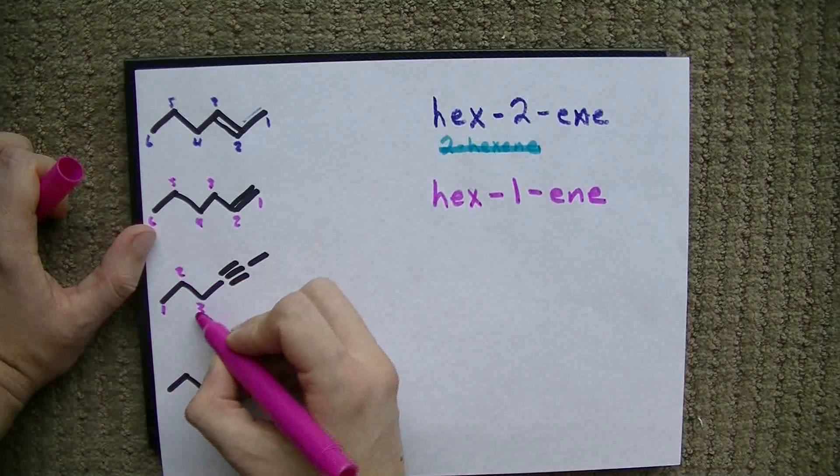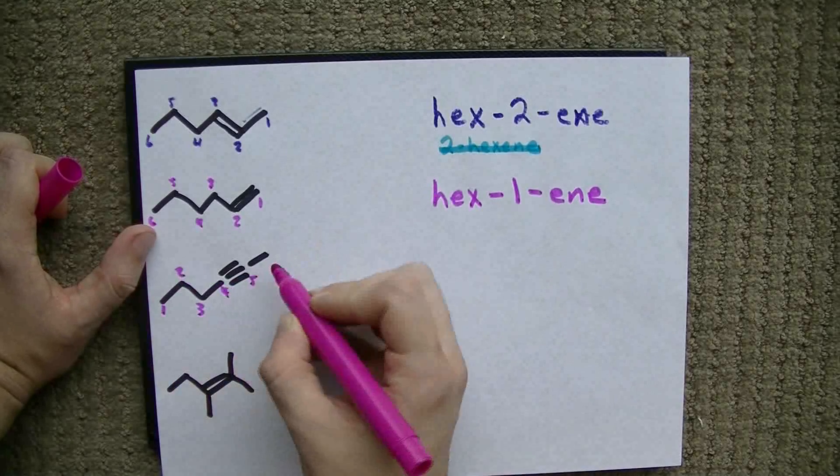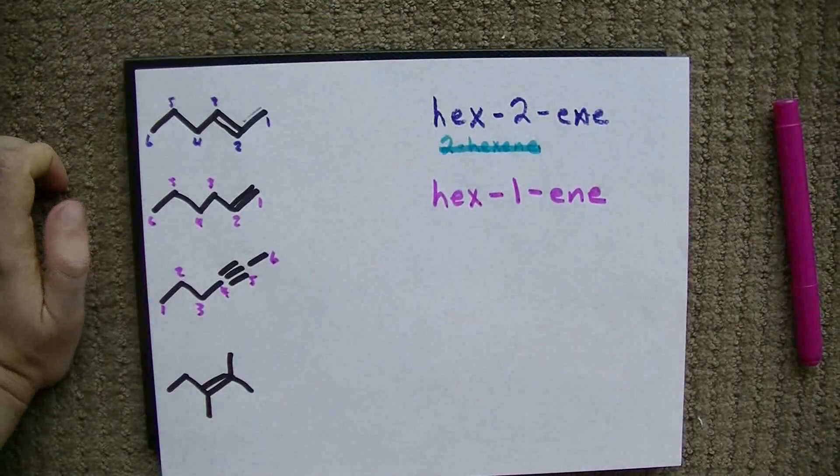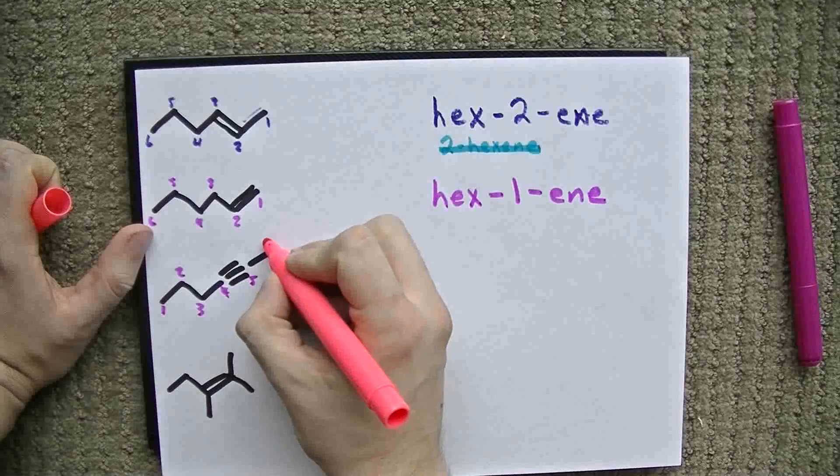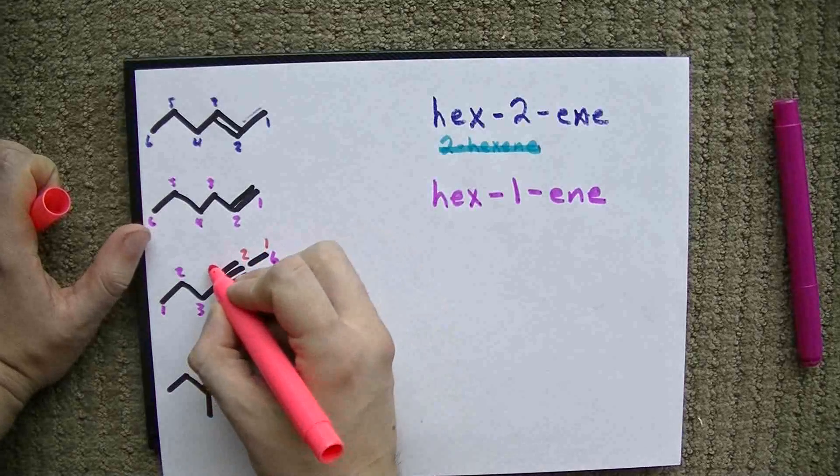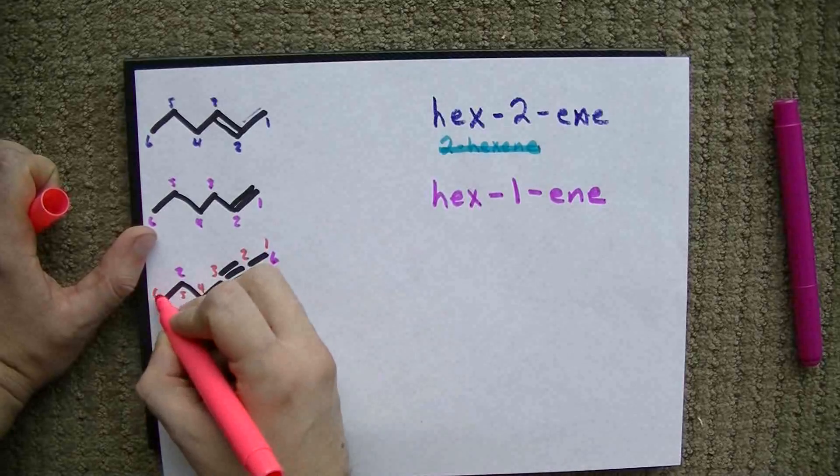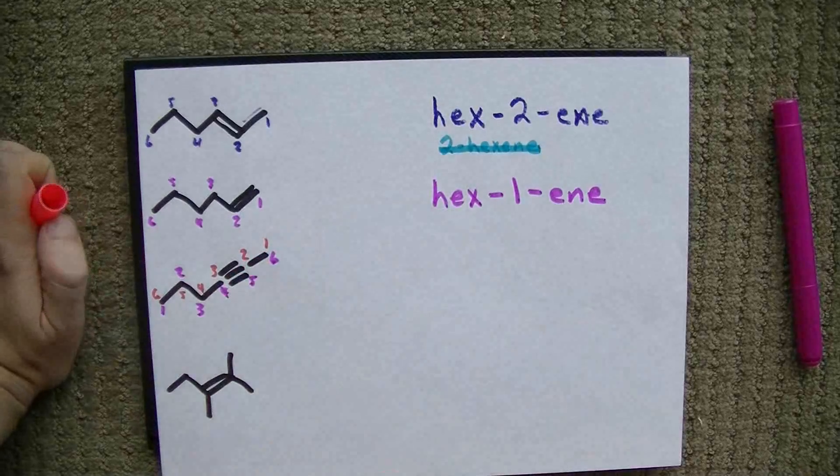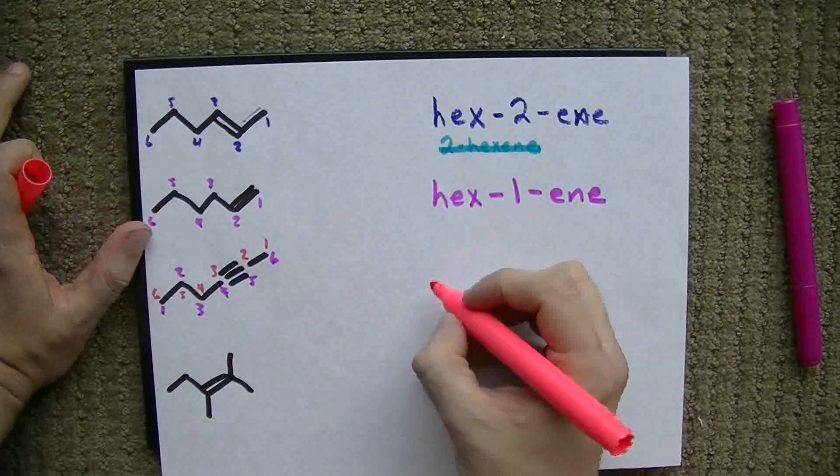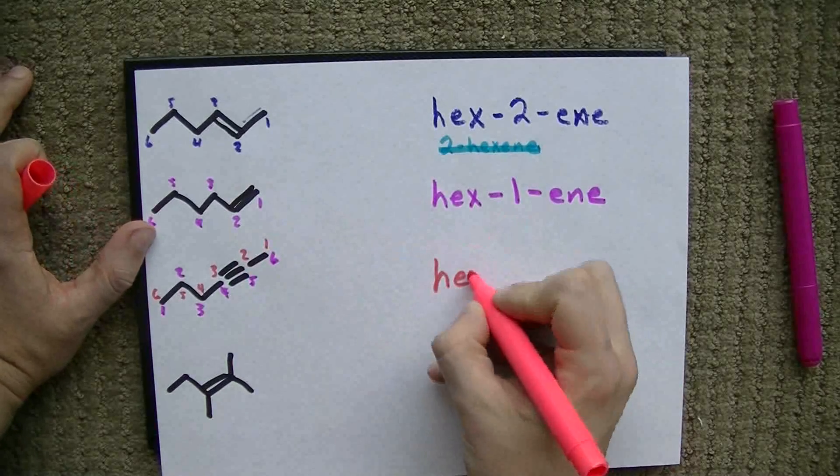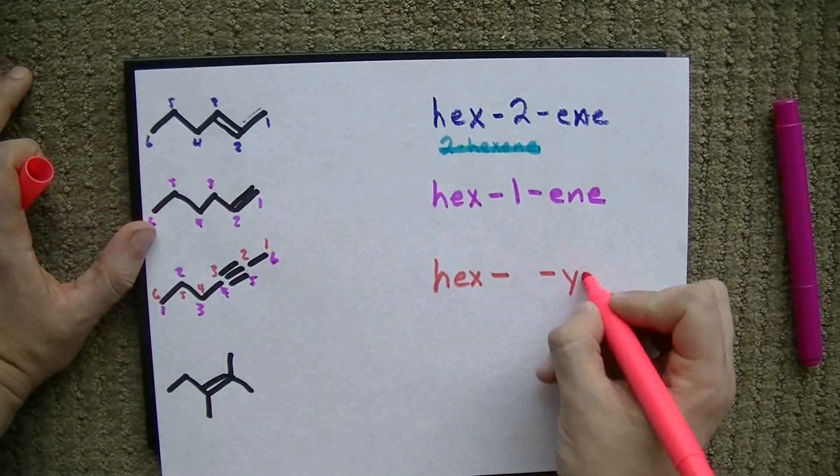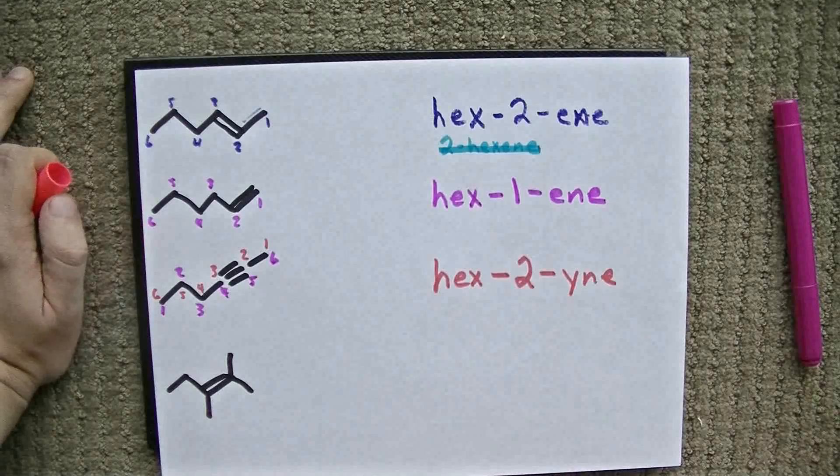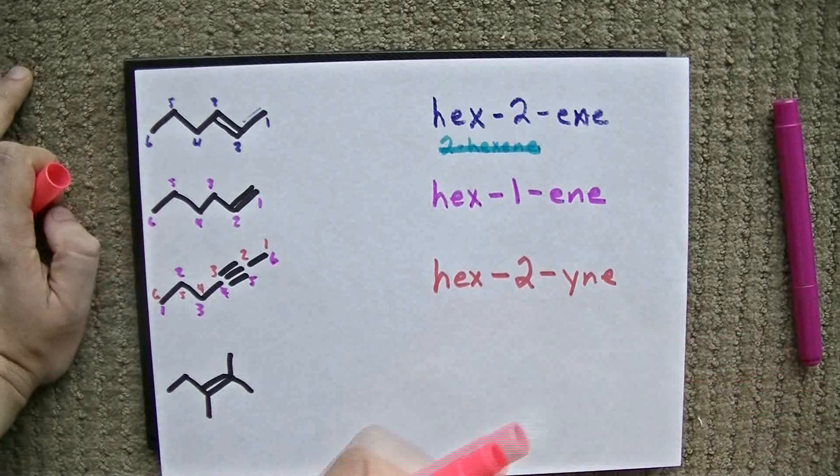1, 2, 3, 4, 5, 6. Oh, no! I think I labeled this in the wrong direction. We could have labeled it 1, 2, 3, 4, 5, 6, and the triple bond would have started at carbon 2. Again, we prefer the lower numbers. So, 6 carbons, hex, and we have a triple bond starting at carbon number 2. Hex-2-yne. Pretty cool.